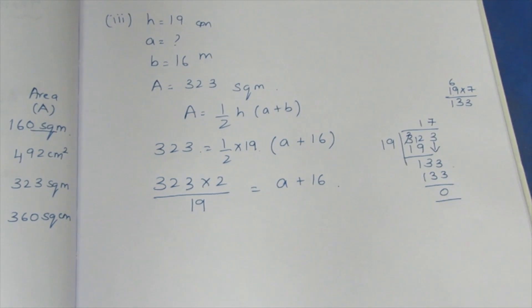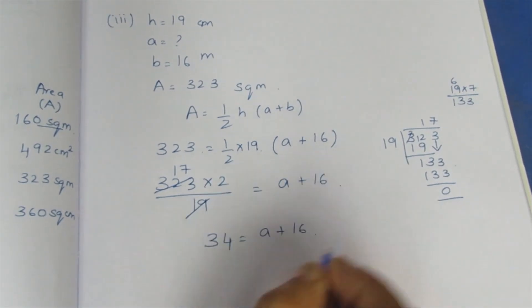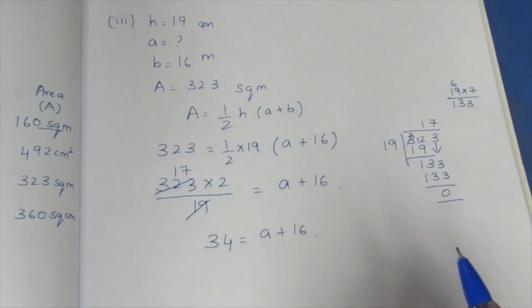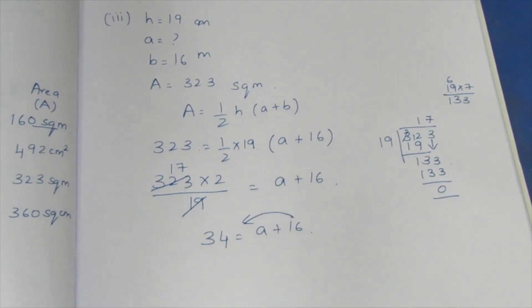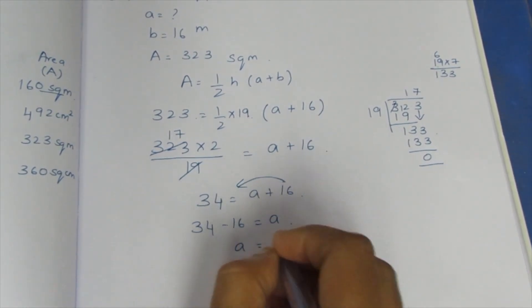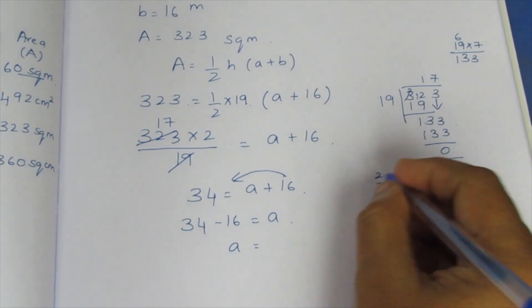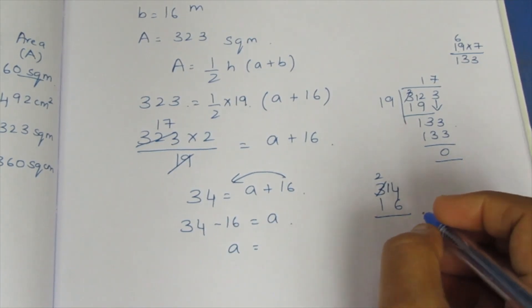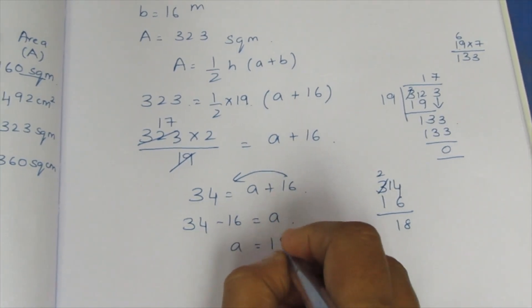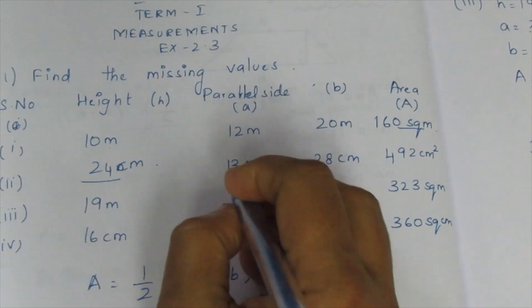So cancel now, we have 17. 19 is 17. 17 into 2 is 34. 34 equals A plus 16. 16 equals this side. If you see it, plus equal to this side becomes minus. 34 minus 16 is equal to A. We will subtract 34 minus 16. This is 2, this is 1, this is 8. A is equal to 18 meters. We will see A is equal to 18 meters.